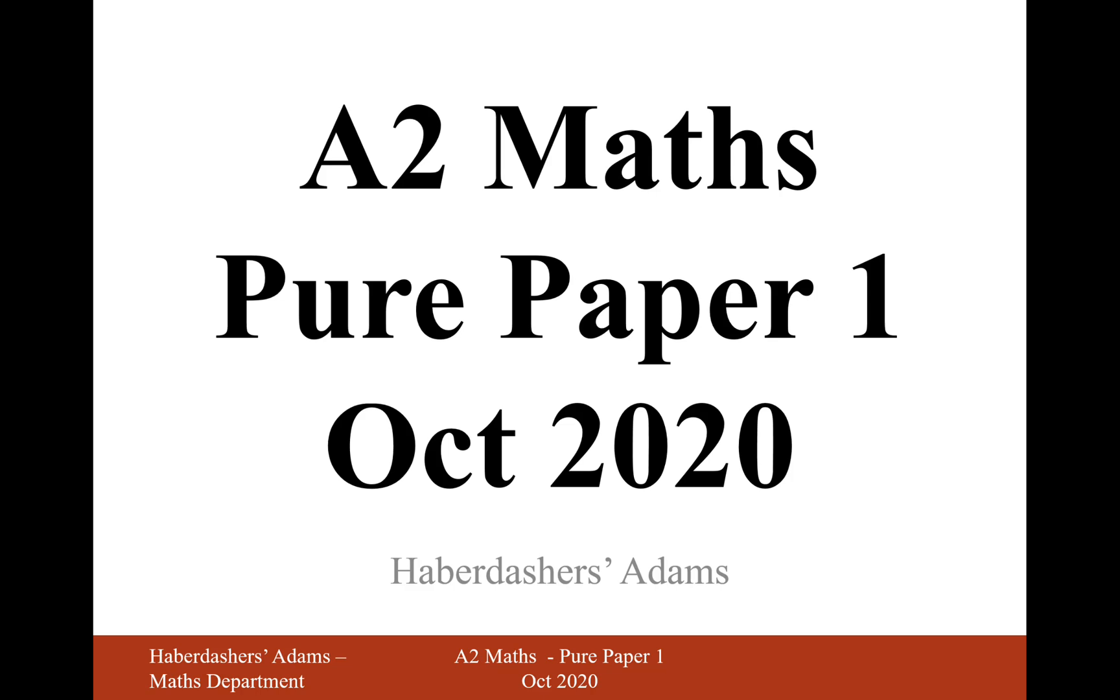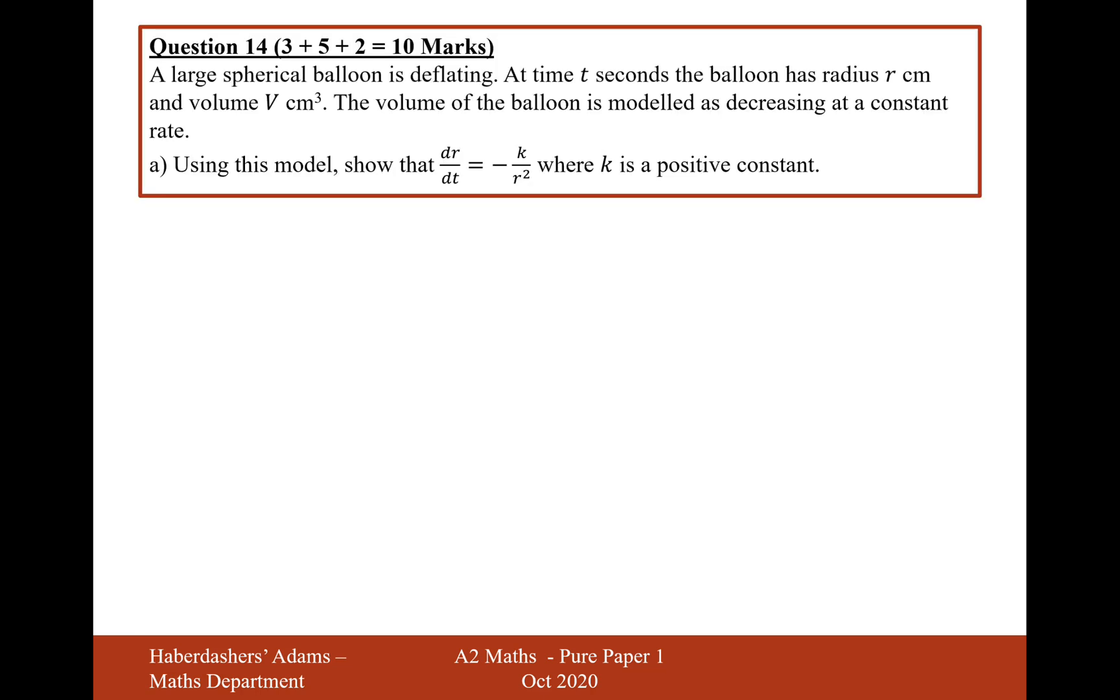Hello there, welcome to the October 2020 paper. Here we're on paper 1, question 14. A large spherical balloon is deflating. At time t seconds, the balloon has radius r and volume V. The volume of the balloon is modeled as decreasing at a constant rate.